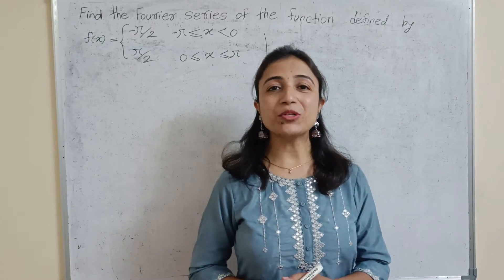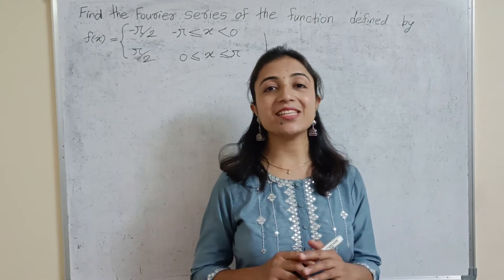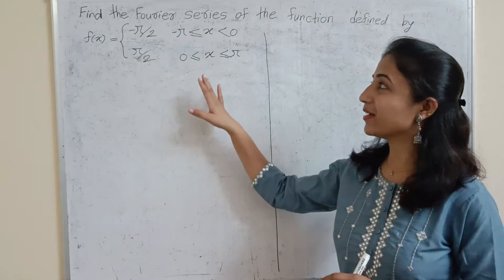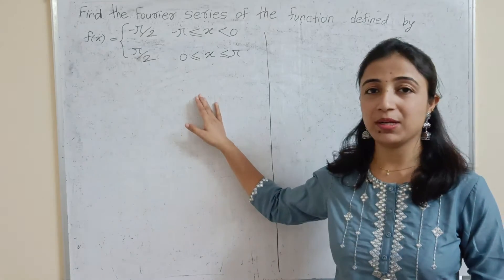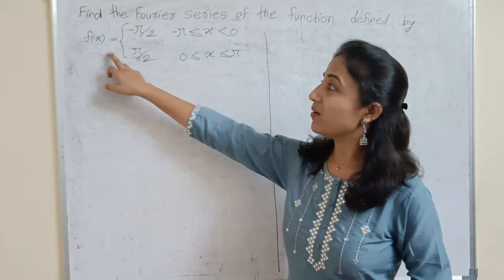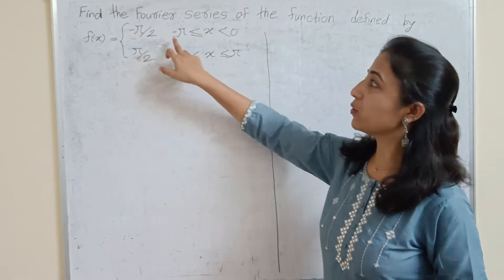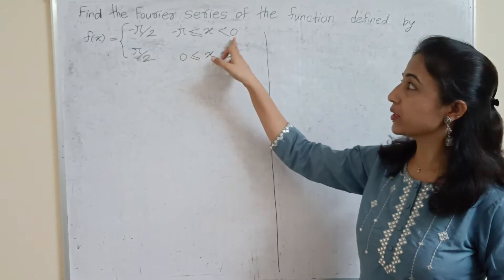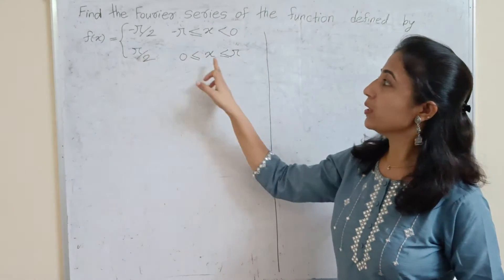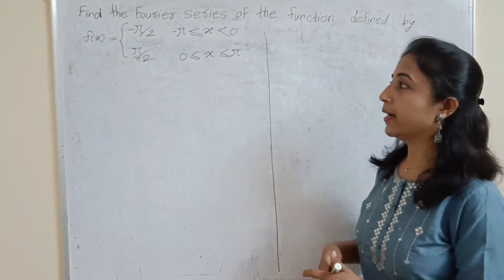Hi everyone, welcome to the next lecture on Fourier series. In this lecture we are going to discuss this interesting example. Here the function is f(x) equal to minus π/2 in the interval minus π to 0, and it is π/2 in the interval 0 to π.